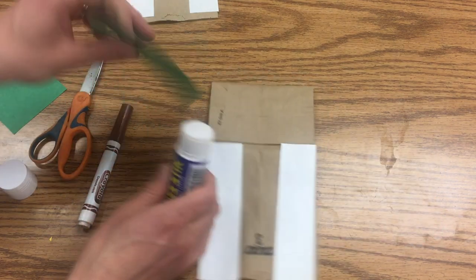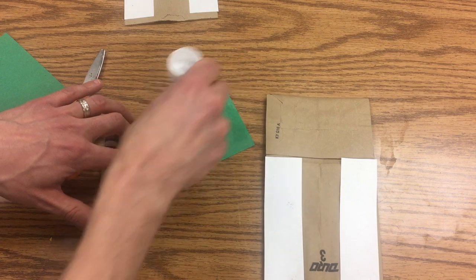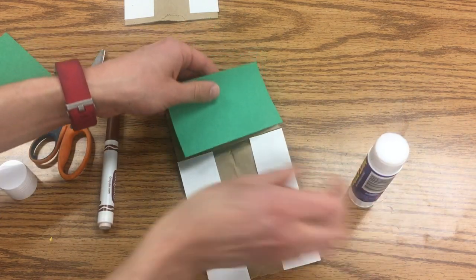Then I'm gonna take a green rectangle and put glue all the way around it and place that here.